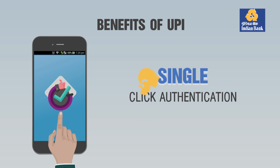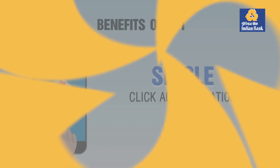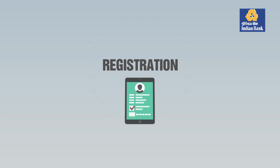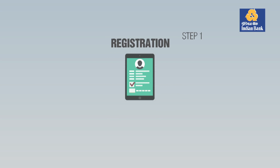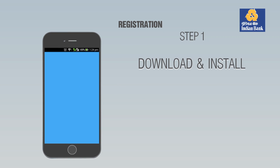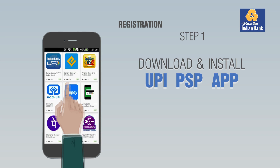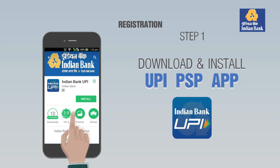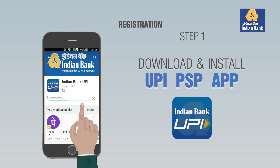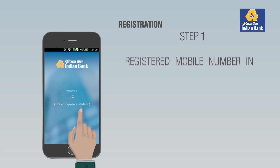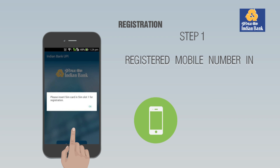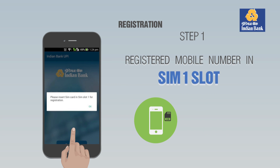Now let's go through the process of availing this service. Registration Step 1: Download and install the Indian Bank UPI PSP mobile app from Google Play Store and open the app. The mobile number registered with the bank must be available in SIM slot 1 for registration.